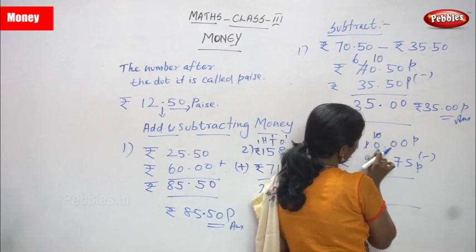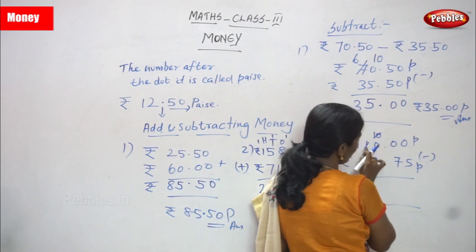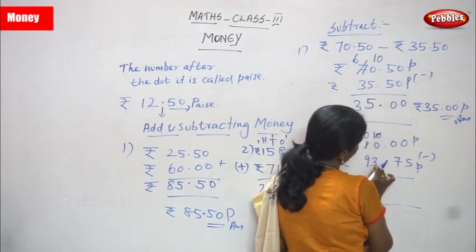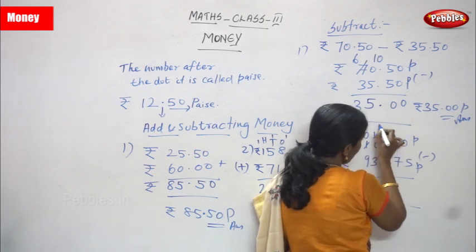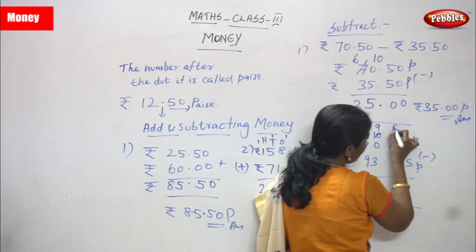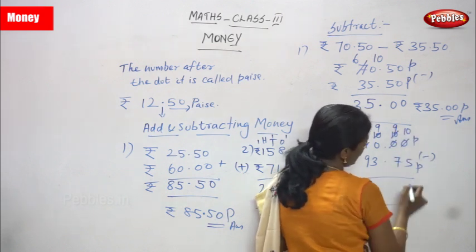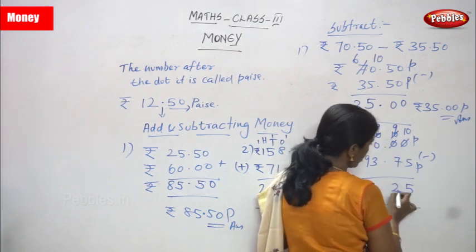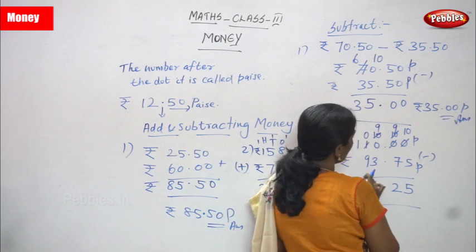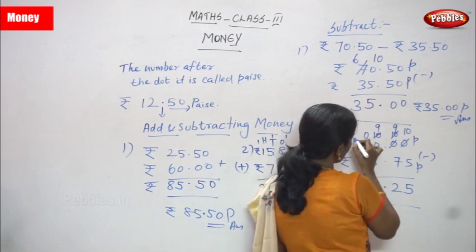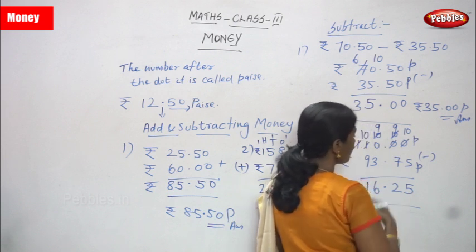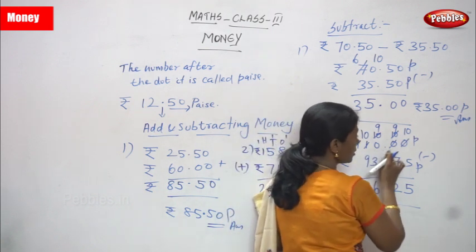Since all three digits are zero, you have to borrow from 110. This 1 becomes 0, this 0 becomes 10. Then borrow again — the 10 becomes 9 and the next 0 becomes 10. Borrow once more — that 10 becomes 9 and the last 0 becomes 10. So 10 minus 5 gives 5, 9 minus 7 gives 2 — put the dot. 9 minus 3 gives 6. Then zero cannot subtract 9, borrow from 100s place — 10 minus 9 gives 1. Answer is 16 rupees 25 paise.